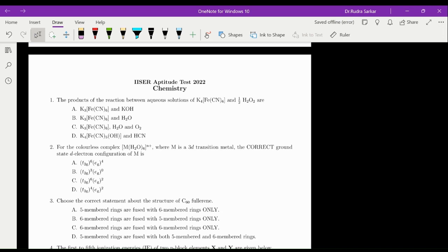Okay, so we are solving the IISC Aptitude Test 2022 Chemistry. The question that is given to us is the products of the reaction between aqueous solutions of K4Fe(CN)6 and H2O2. When we react K4Fe(CN)6 with H2O2, oxidation reaction will take place and the products that we will obtain are going to be K3Fe(CN)6 and water.